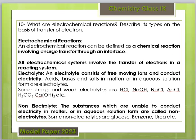The substances which are unable to conduct electricity in molten or aqueous solution are called non-electrolytes. Examples of non-electrolytes include glucose, benzene, urea, and plastic. Now the second part: you have to describe the types of electrochemical reactions, which are classified on the basis of transfer of electrons.